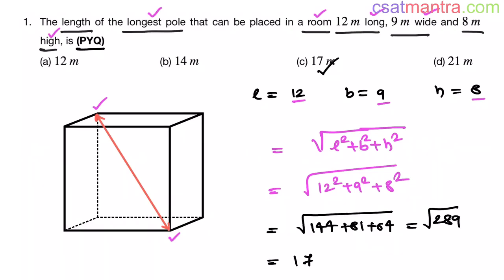Very simple problem. The longest pole is the body diagonal in a cuboid. The length of the body diagonal equals the square root of L² + B² + H², and that's what we found here.